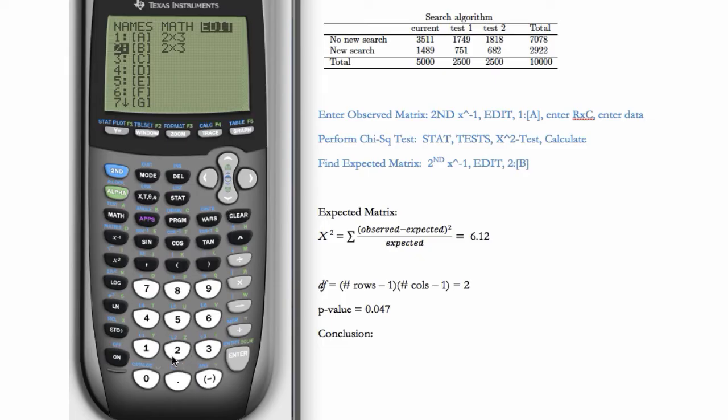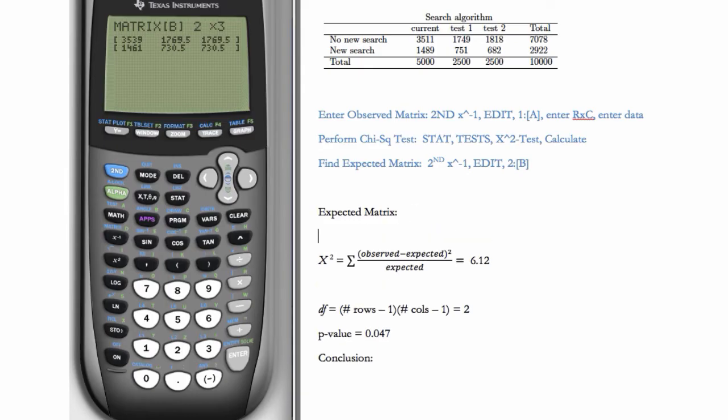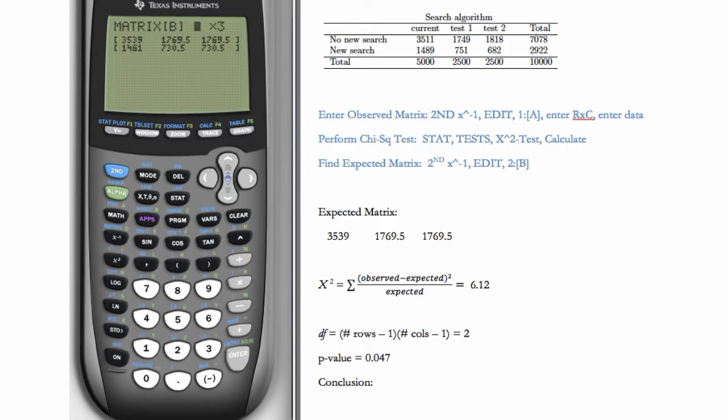And you'll see that here is our expected counts listed in this matrix B. So we can record these here. And you'll notice that the expected counts don't have to be integers. The observed counts would be integers. We can record these here.